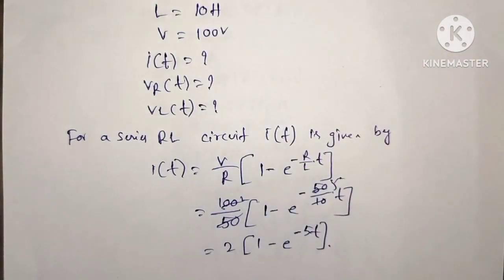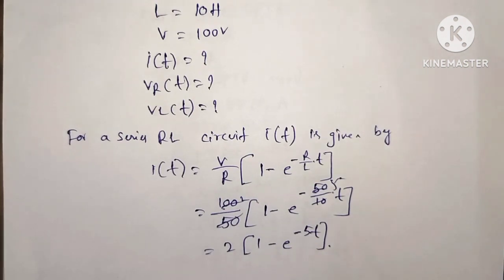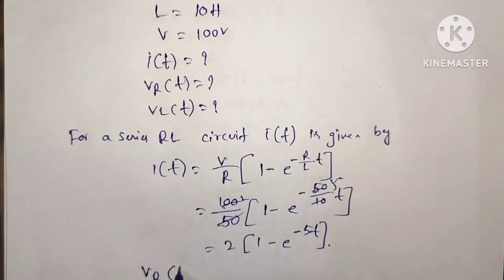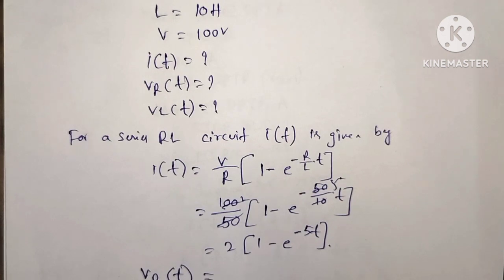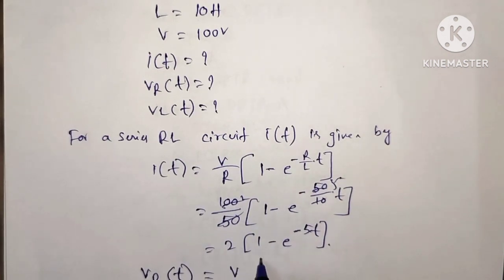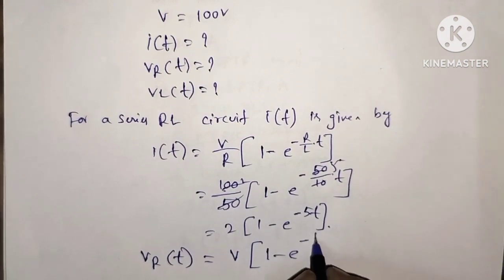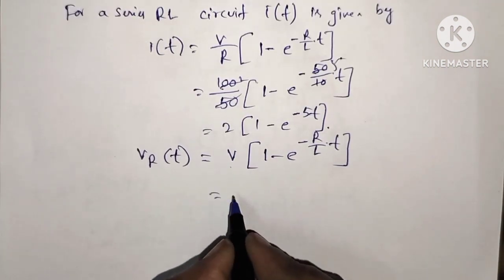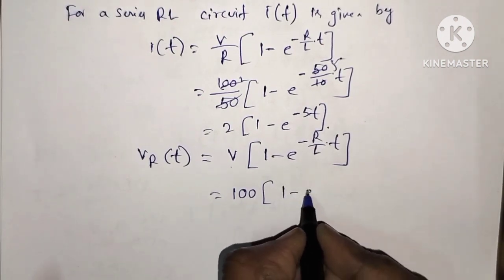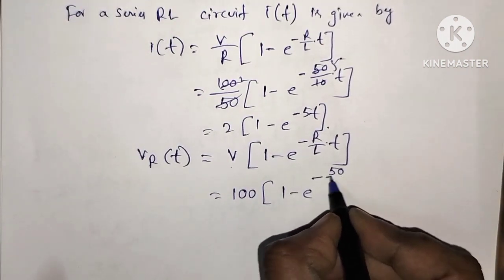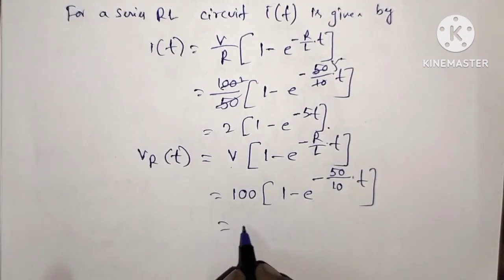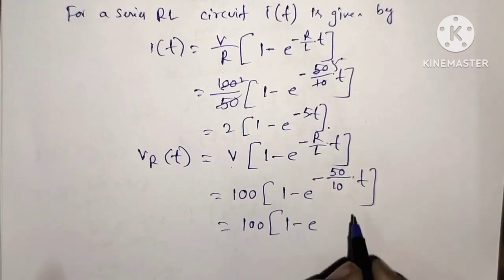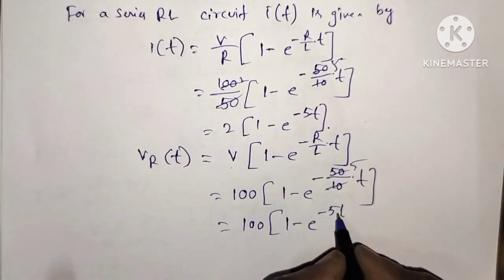First point: find the equations for I of t, Vr of t, and Vl of t. Next, the voltage across the resistor Vr of t. The formula for Vr of t equals V into 1 minus e power minus R by L into T. Substituting values: V equal to 100, R equal to 50 ohms, L equal to 10 henrys. So Vr of t equal to 100 into 1 minus e power minus 5T.